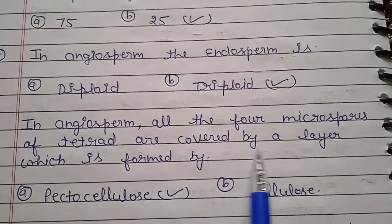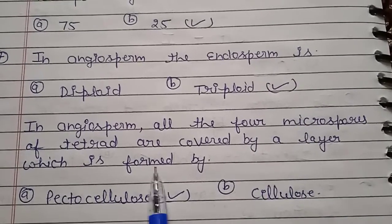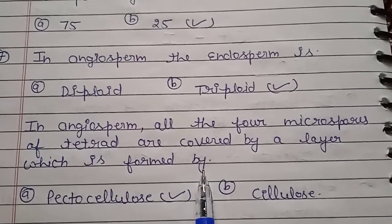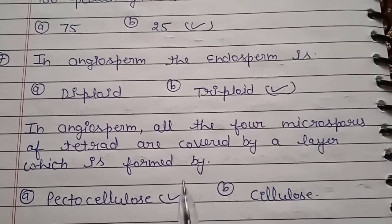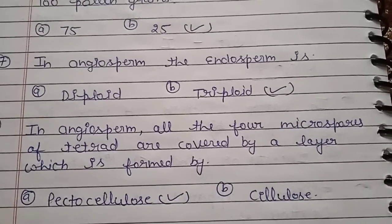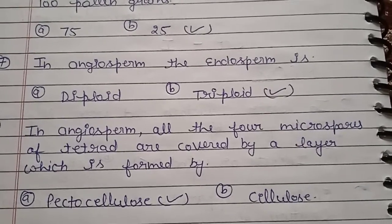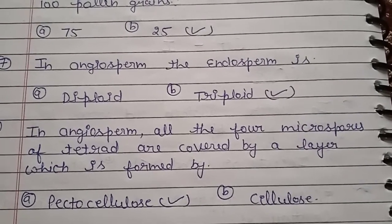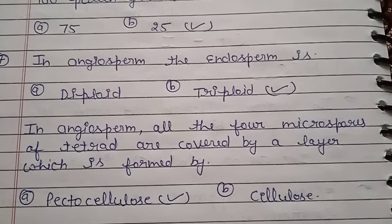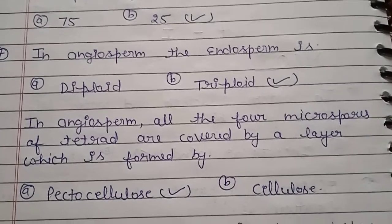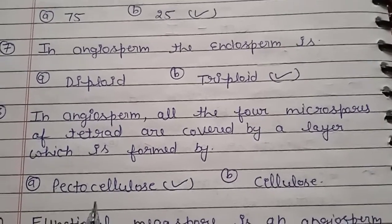Question number 8: in angiosperm, all 4 microspores of a tetrad are covered by a layer which is formed by what? That layer is formed by pectocellulose, so the right answer is pectocellulose.